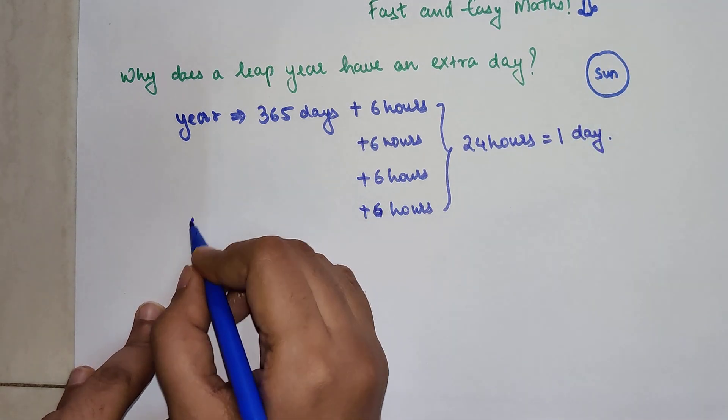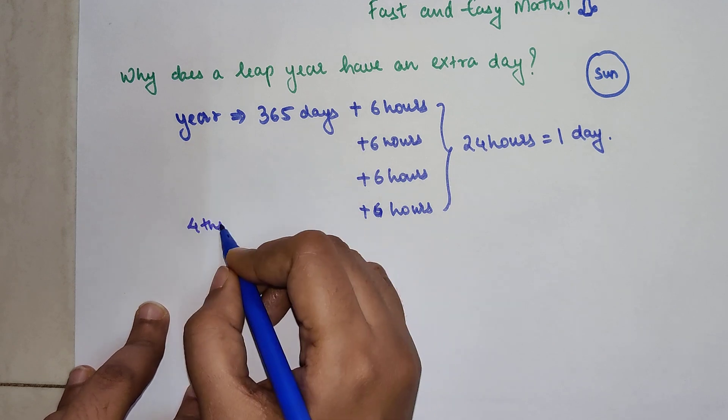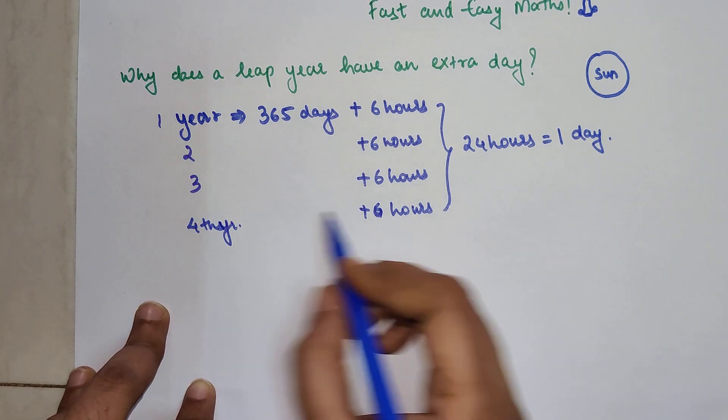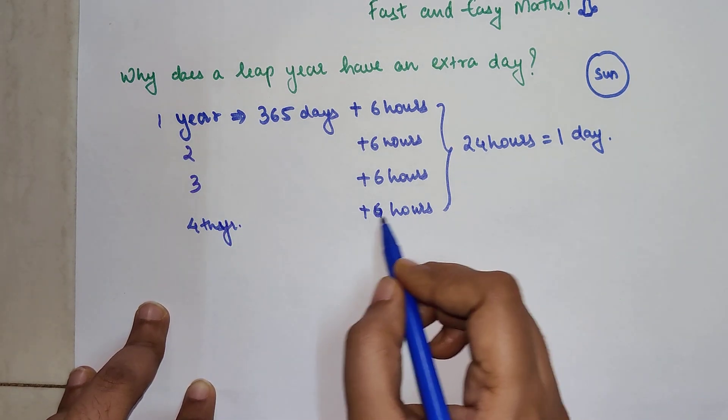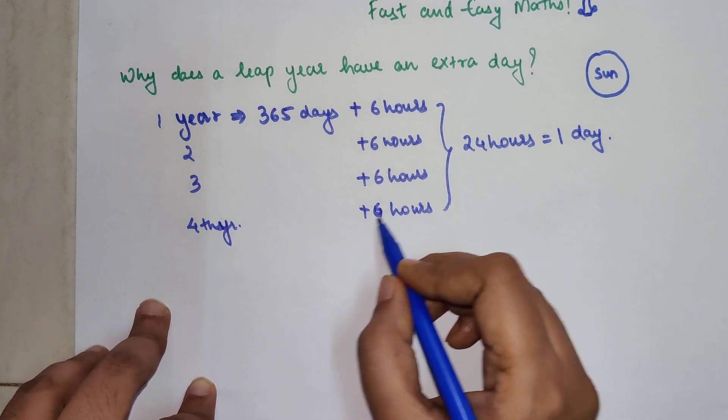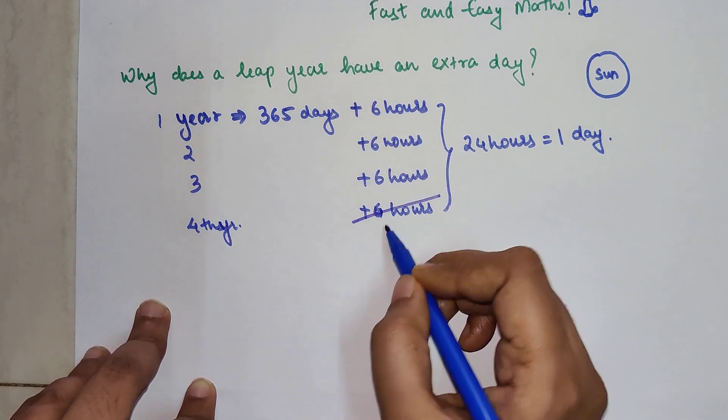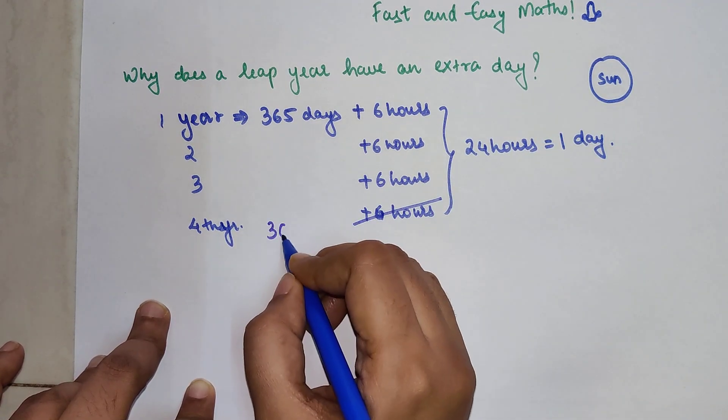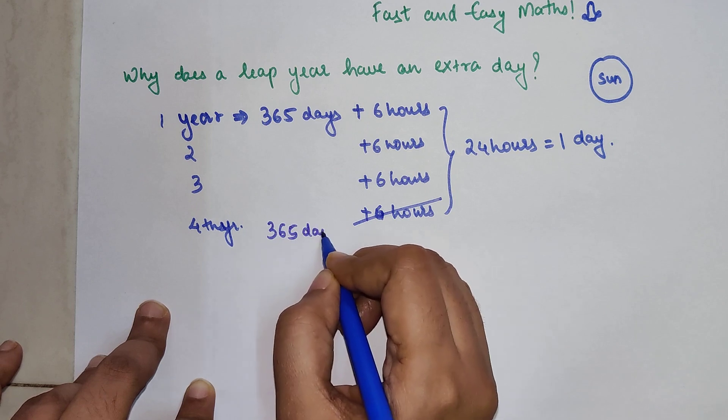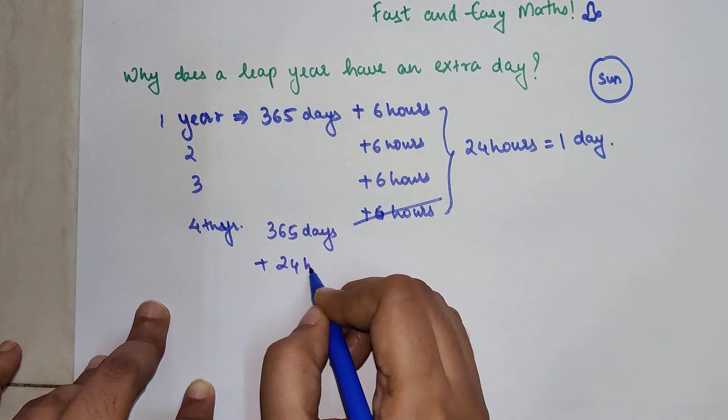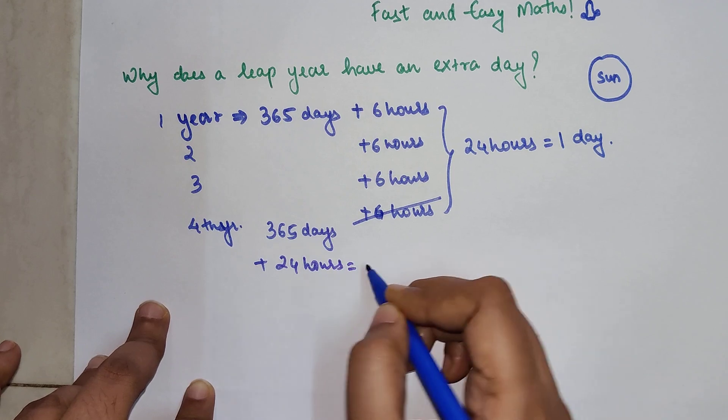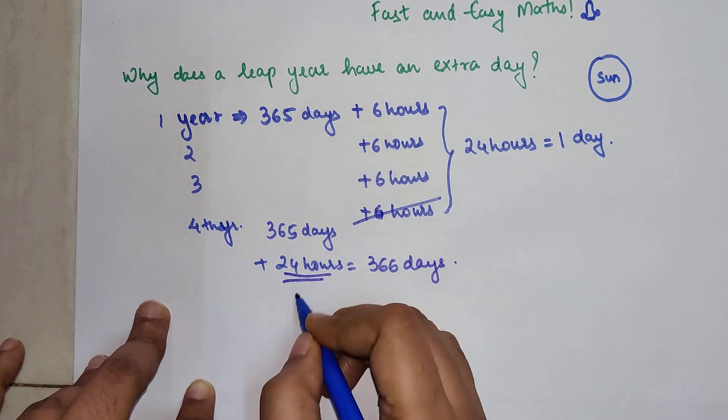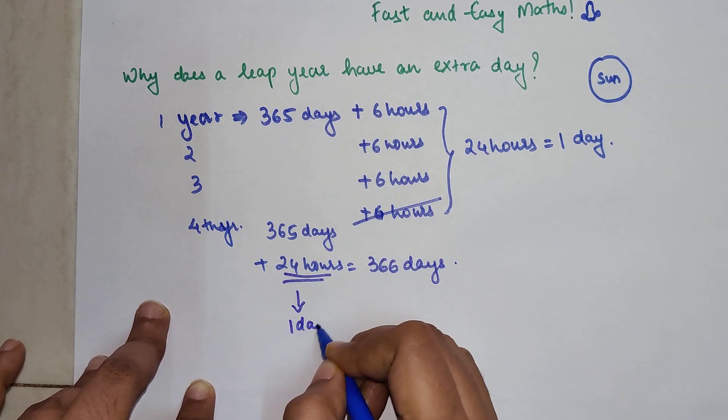Therefore, at the fourth year, this is your first, second, and third. Now for the fourth year, what happens is instead of this 6 hours, we just add simply 24 hours of the previous all the 6 hours added. So here we get 365 days plus 24 hours, which is equal to 366 days. Why? Because this is equal to 1 full day.